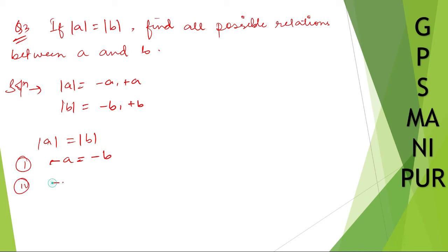Another, I can write down minus A is equal to plus B. I can write down third as, let me take plus now. So, A is equal to minus B and I can take as A is equal to B.